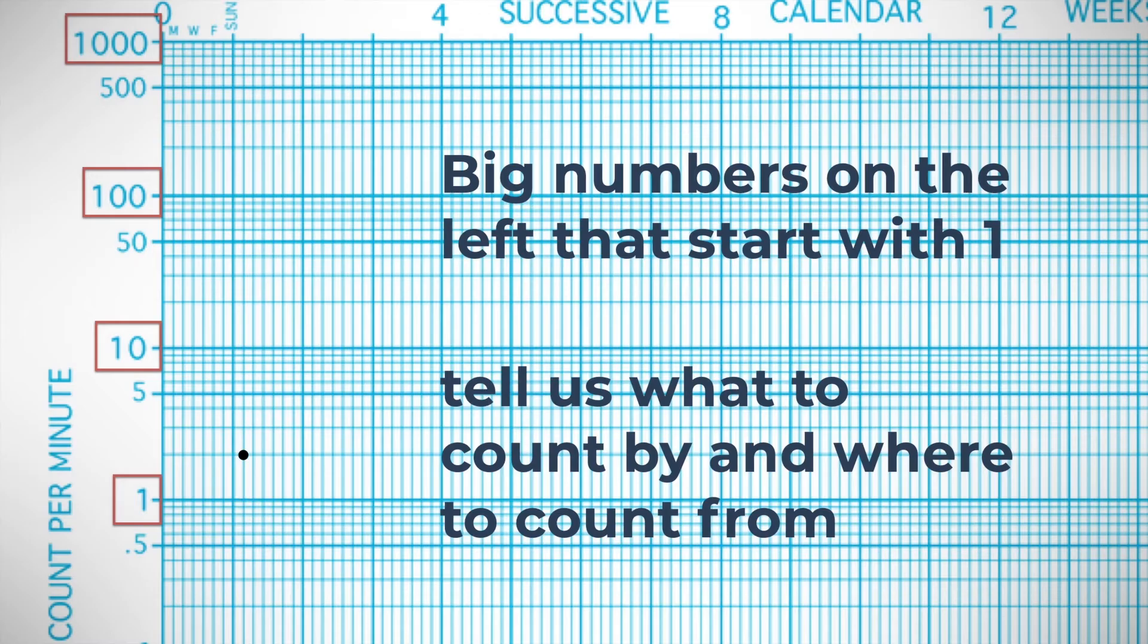We follow the rule. This is telling us we're going to be counting by ones because we just started on that big number on the left that started with one. So we're going to count by ones. Here we go: that's two, this is three per minute, four per minute, five per minute, six, seven, eight, nine, and ten per minute.